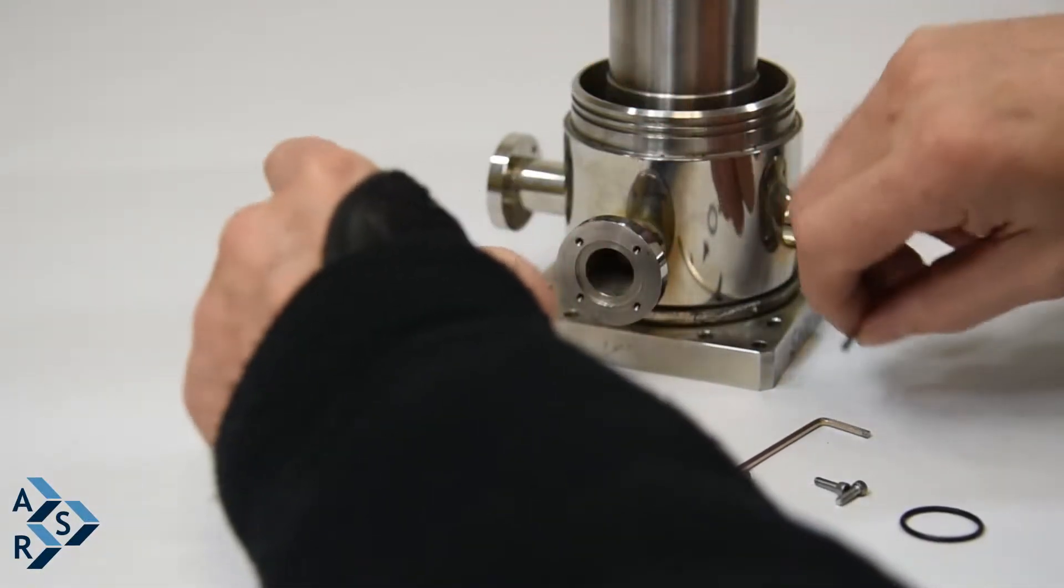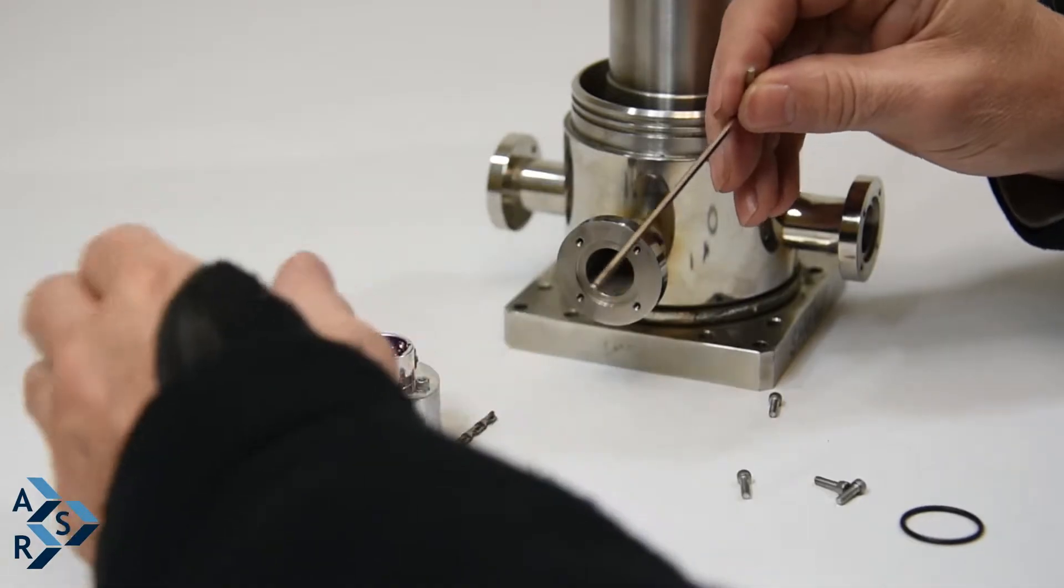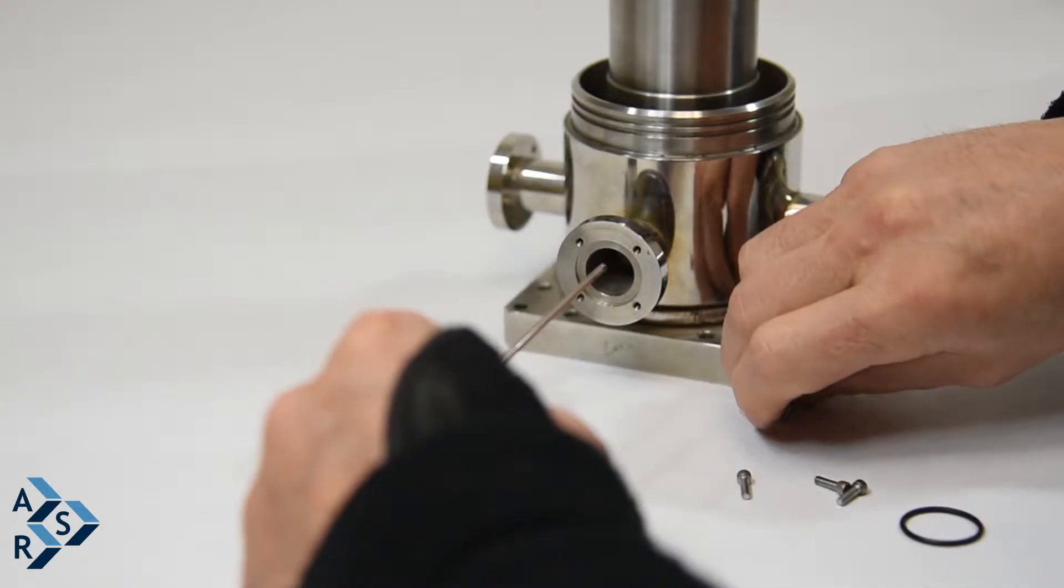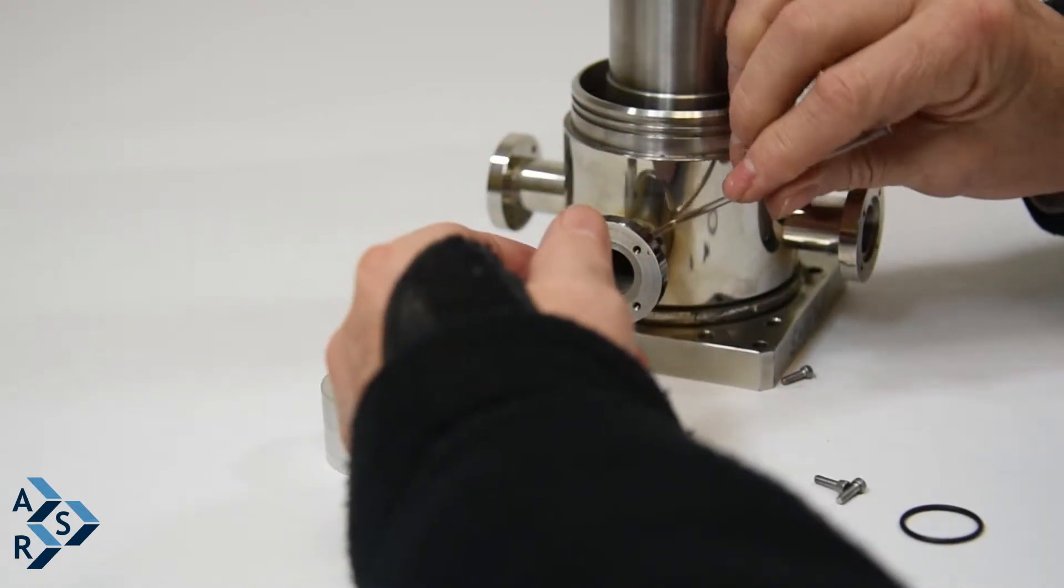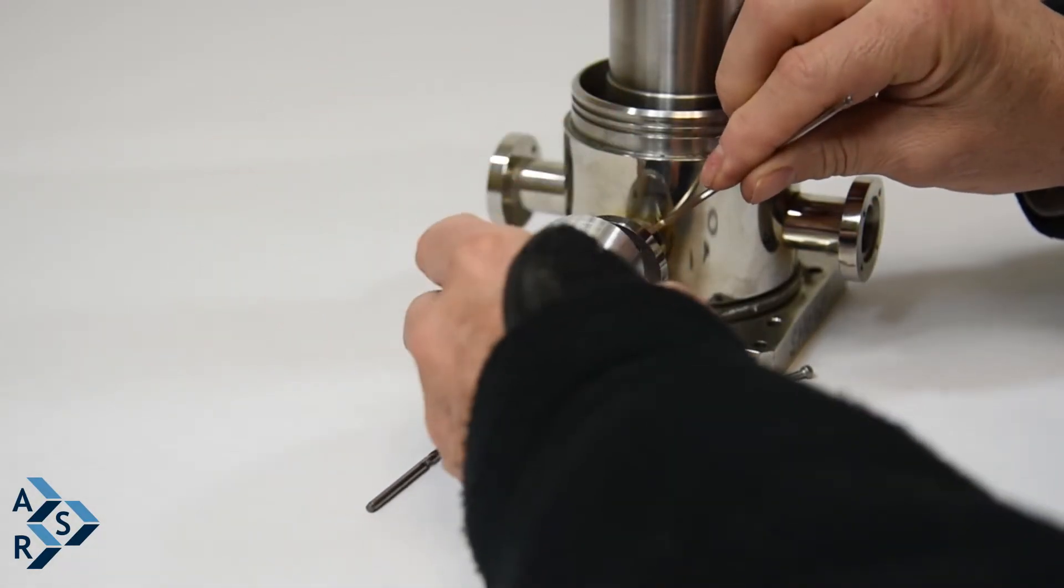Put your screw in and then you're going to need to use a 3/32 allen key. Once you get the screws in, just use your allen key from the back in order to tighten the screws into this aluminum bar and that's all.